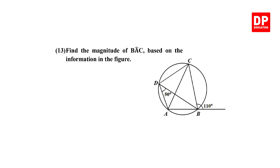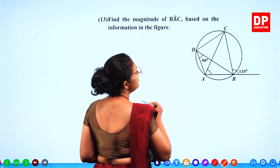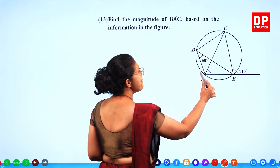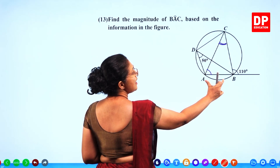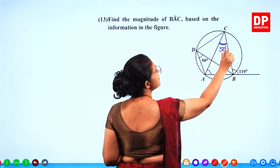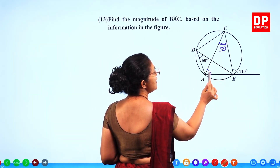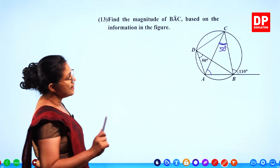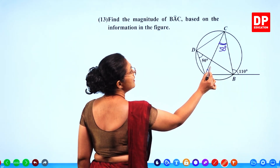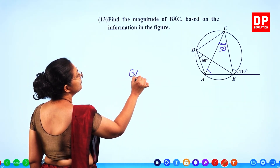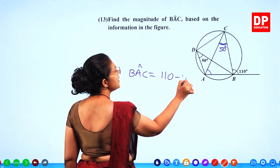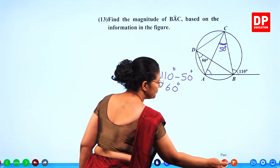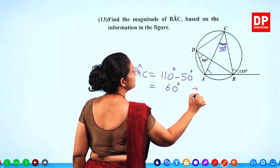Question number 13: find the magnitude of angle BAC based on the information in the figure. Same segment angles are equal, so this angle is 50 degrees. The sum of opposite angles of a triangle equals the exterior angle. So angle BAC equals 110 minus 50 equals 60 degrees. Two marks for that.